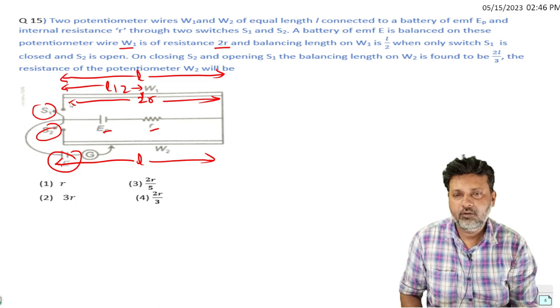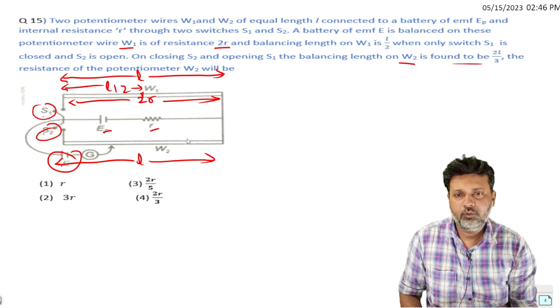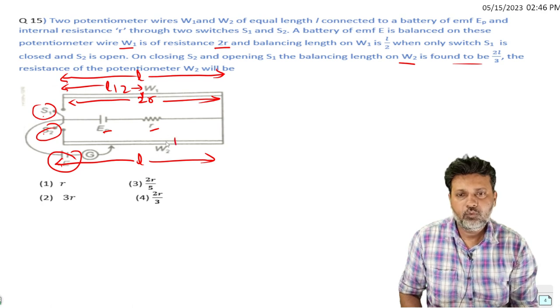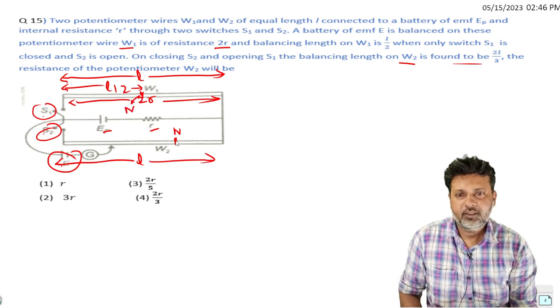When S1 is on and on closing S2, W2 is found to have balance point at 2l/3. This is the final balance point at 2l/3.